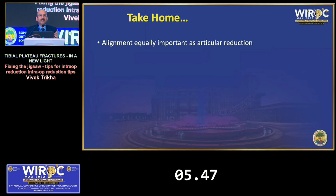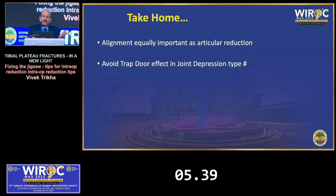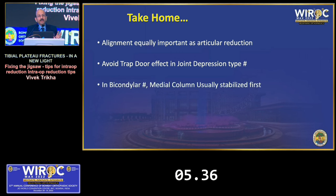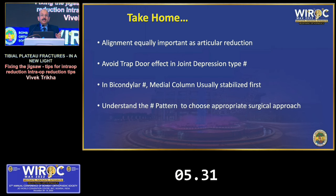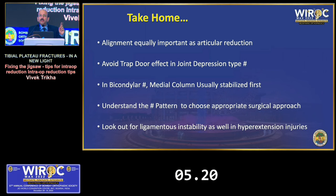Take-home messages: alignment is equally important in tibia as articular reduction. Avoid the trap door effect in joint depression types. In bicondylar fractures, the medial side usually needs to be fixed first because it is less comminuted. Understand the fracture pattern to decide approaches. Look out for this new type of injury — hyperextension, the anteromedial compression — and look for ligamentous disruptions, as they are critical to stability.